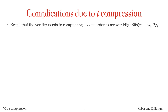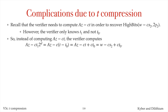Recall that the verifier needs to compute Az minus ct in order to recover the high bits of w minus cs2. Unfortunately, the verifier only knows t1 and not t0. So instead of computing Az minus ct, the verifier computes Az minus ct1 times 2 to the d, which equals Az minus c times (t minus t0), which is equal to w minus cs2 plus ct0, after replacing Az minus ct by w minus ct. The verifier would like to add minus ct0 to get w minus cs2, but the verifier doesn't know t0. But note that the verifier doesn't need w minus cs2, but only its high bits.